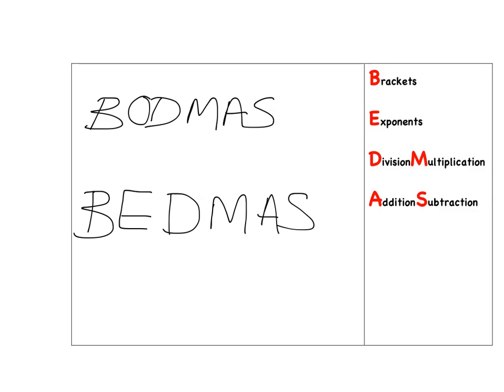What BEDMAS tells us is that whenever we're faced with a calculation, we first need to deal with the brackets, then the exponents, then division or multiplication, and then addition or subtraction. The best way to check this is to look at some examples, and we're going to do some examples where you see negative numbers involved in the calculations.